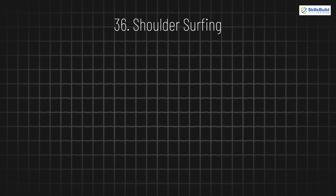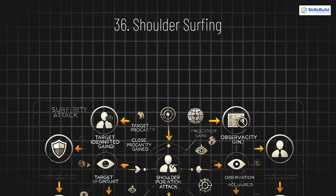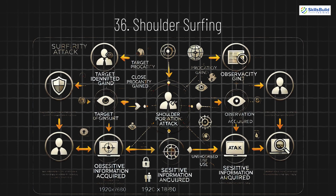36. Shoulder Surfing. Shoulder surfing involves physically watching over someone's shoulder to steal their private information, like passwords or account numbers, by observing what they're typing.